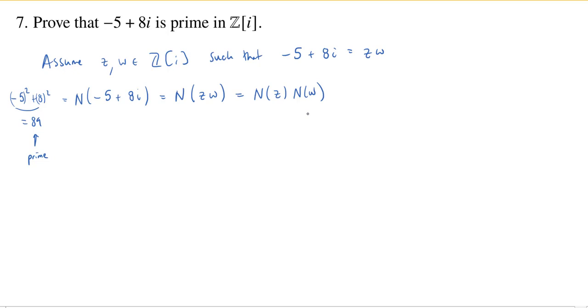But I've now translated this product formula, which lives inside of ℤ[i], into a divisibility relationship in ℤ. So I have 89 equals N(z) times N(w). But the norm maps, the output of those, they're all integers. In fact, they're even non-negative integers. So this lives inside ℤ.